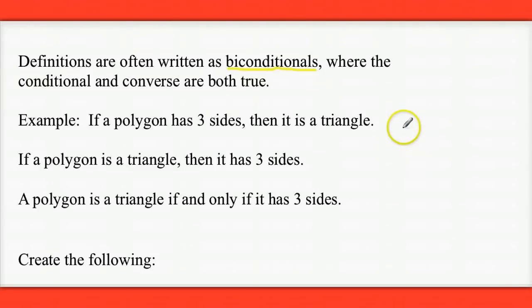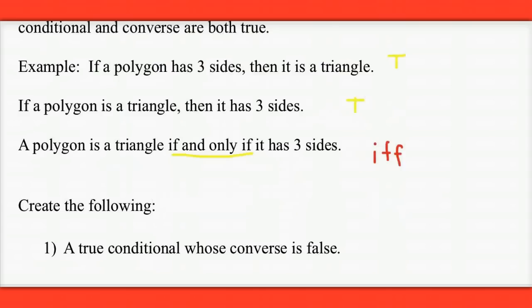So here, both the original statement and the converse are true. One way we can write that is by using this phrase if and only if. A lot of textbooks abbreviate if and only if with three letters, I, F, F, if and only if. The way this is read is a polygon is a triangle if and only if it has three sides.